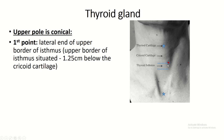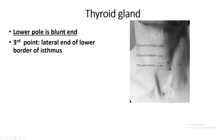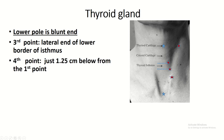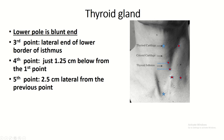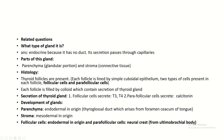Upper pole landmarks: first point, the lateral end of the upper border of the isthmus; second point, the anterior margin of the sternocleidomastoid at the level of the laryngeal prominence; third point, the lateral end of the lower border of the isthmus; fourth point, 1.25 cm below the first point; fifth point, 2.5 cm lateral from the previous point. Join all these points by a curved line — this represents the lobe and isthmus of the thyroid gland.